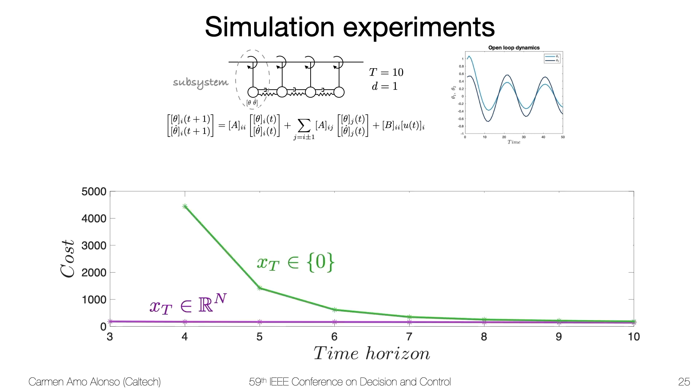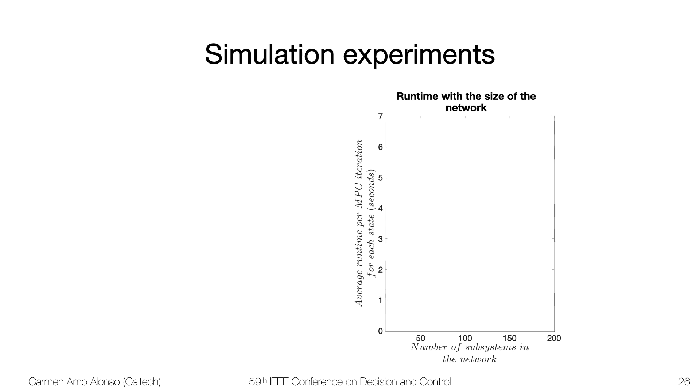We also studied the impact of introducing the origin as a terminal set, and we're currently investigating the synthesis of less conservative terminal sets. We also investigated how the complexity of our algorithm scales with the size of the network, and to do that we looked at the average runtime per MPC iteration, and we normalized that per state in the subsystem.